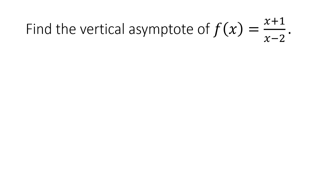Going back to the given function, to get the vertical asymptote, you have to equate the denominator to 0. In this case, the denominator is x minus 2, so we equate it to 0.